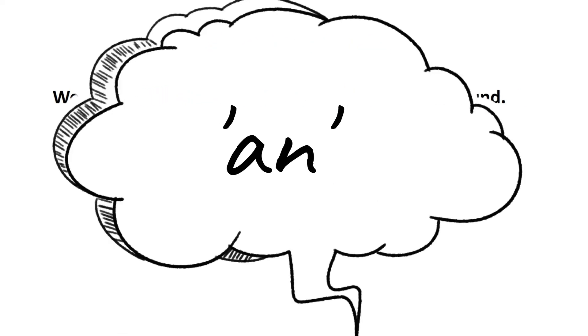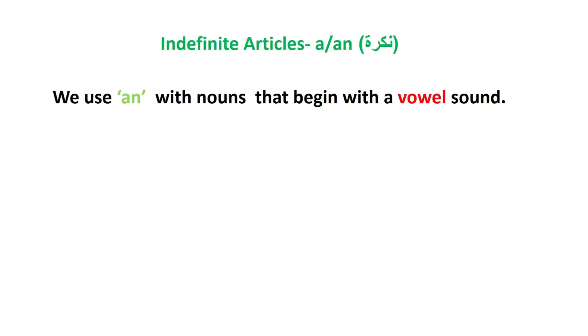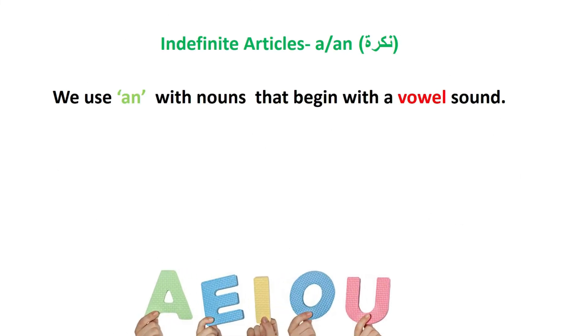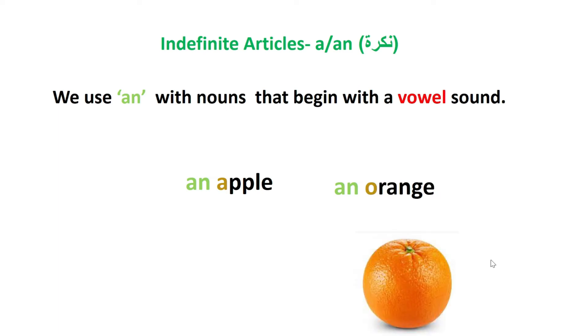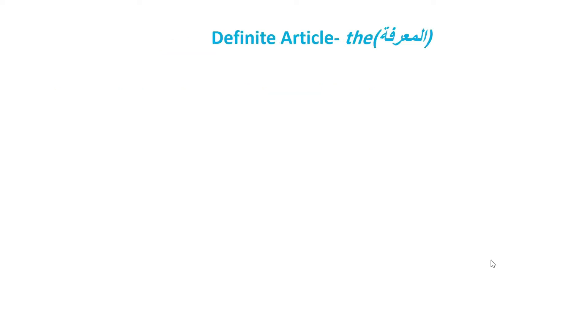We use 'an' with nouns that begin with a vowel sound, like 'an apple' or 'an orange.' The 'a' and 'o' are vowel sounds, so we use 'an.'